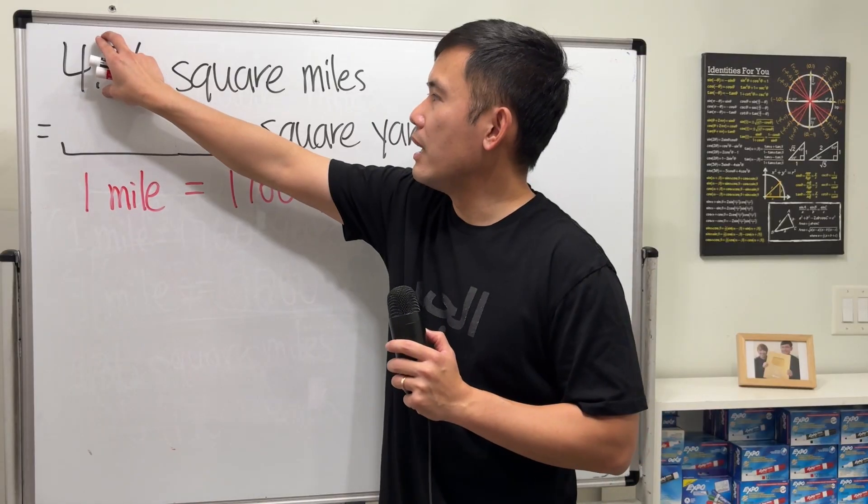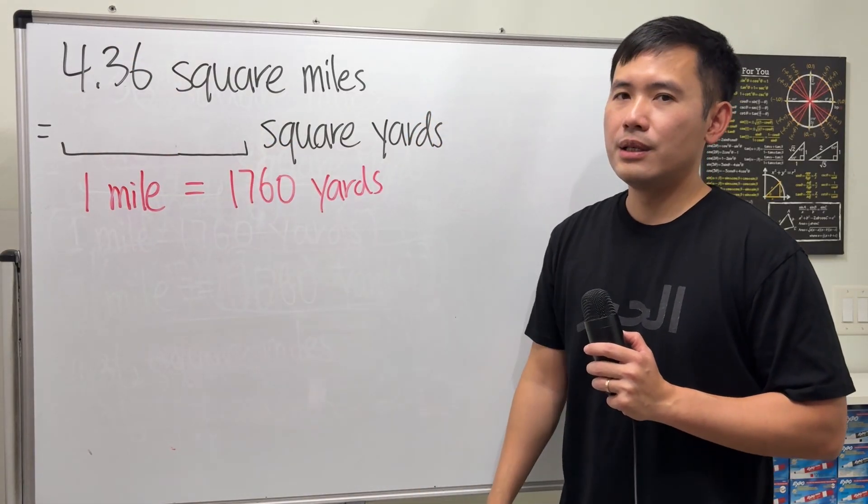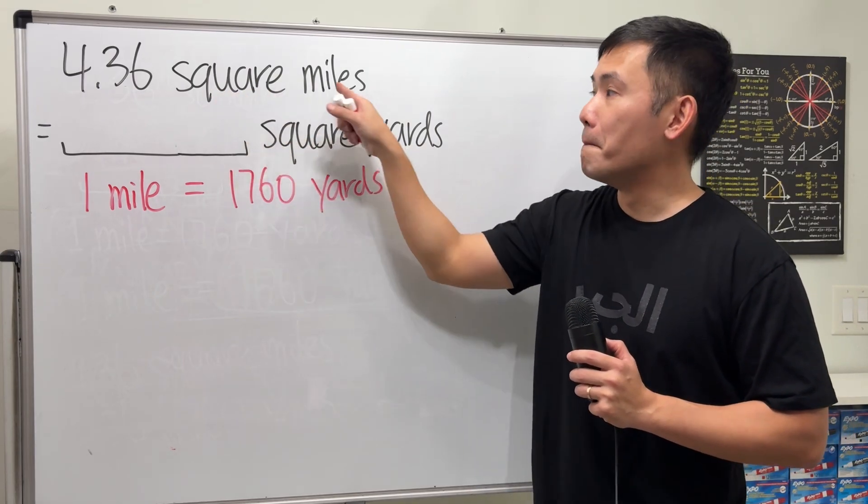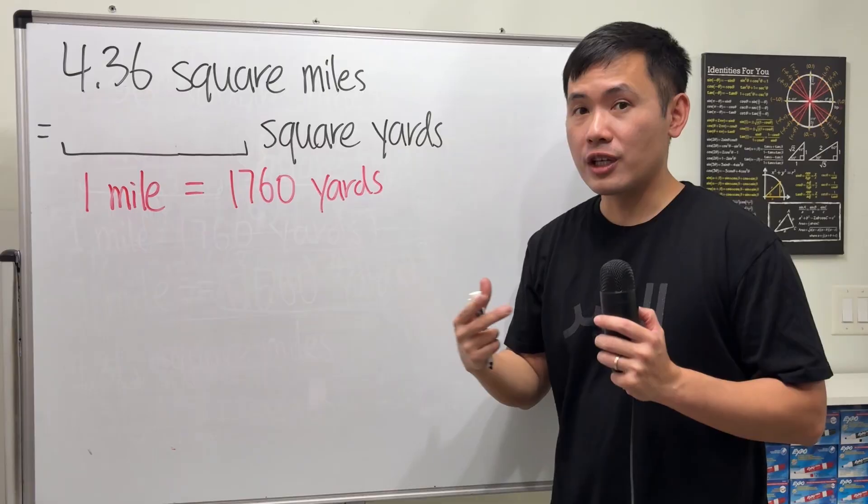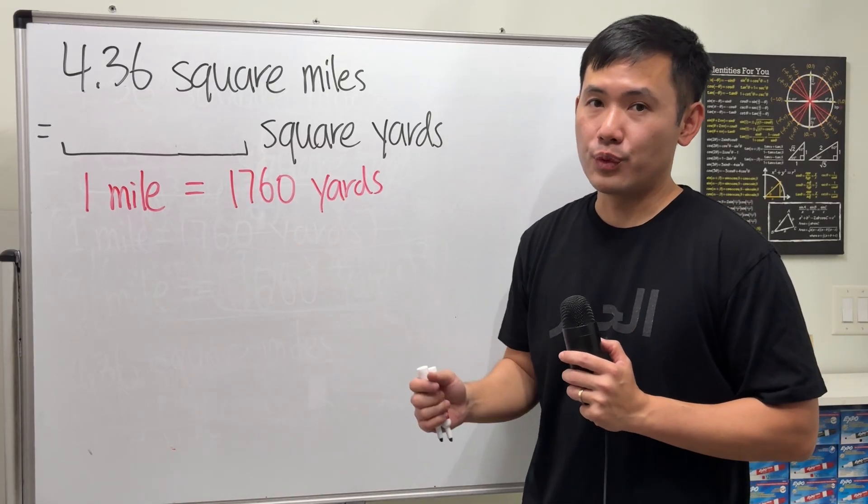Firstly though, do not just multiply 4.36 with 1760 because this right here is about square miles. So we are talking about areas. This is just the length. So how do we get to the square?